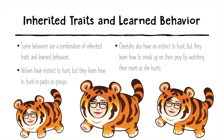Inherited traits and learned behaviors aren't always just separate — sometimes we see a combination of those. Like when wolves have the instinct to hunt, but they learn how to hunt in packs or groups. Cheetahs also have the basic instinct to hunt for their food, but they learn how to sneak up on their prey by watching their mom as she hunts.